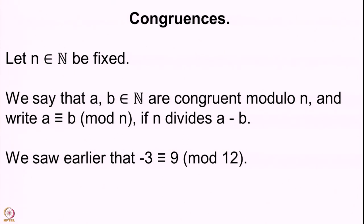This is only for natural numbers, but we also saw earlier that minus 3 is congruent to 9 modulo 12. This is easy to check because 9 minus (minus 3), which gives 9 plus 3, is 12, which is divisible by 12. So 9 is indeed congruent to minus 3 modulo 12. But some of you may question that the definition of congruence was only for pairs a, b coming from natural numbers — how do you allow minus 3 then?